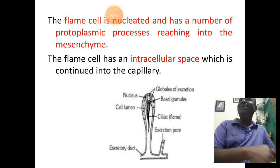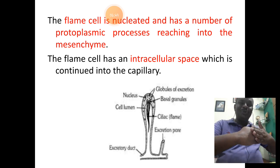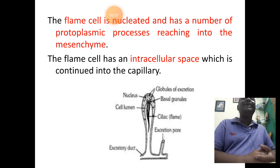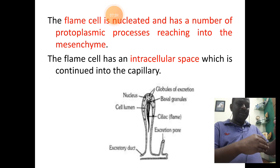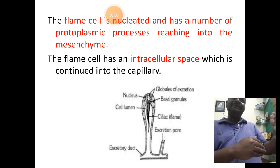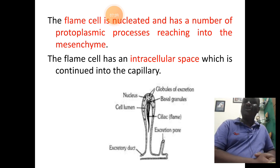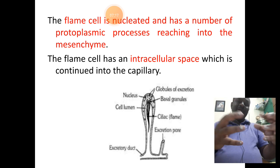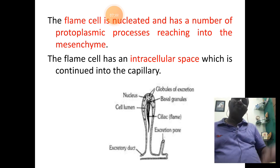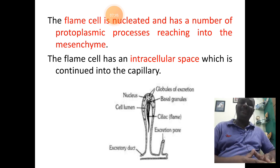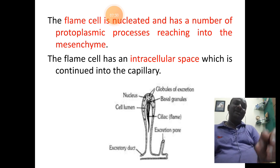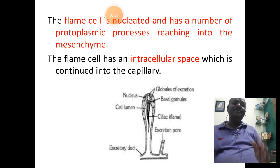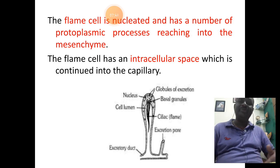This removal is done by means of the flame cell, which has a close attachment with the mesenchyme cells. By capillary action, the mesenchyme cells throw out their excretory waste into the flame cell or solenocyte via protoplasmic processes. This waste moves within the cytoplasm of the solenocyte towards a central cavity — called the intracellular cavity or intracellular space — present at the center of the cell.